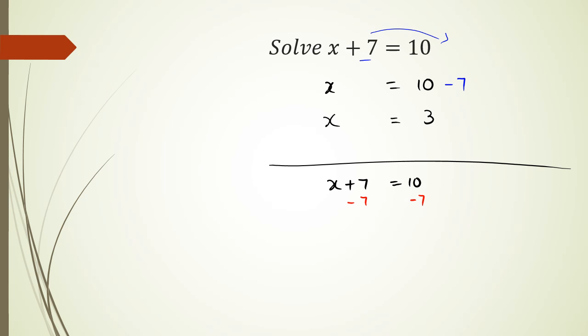On the left-hand side, I have x. 7 minus 7 is 0. I leave my equal sign. 10 minus 7 is 3. And as you can see, same kind of ideology, same answer.